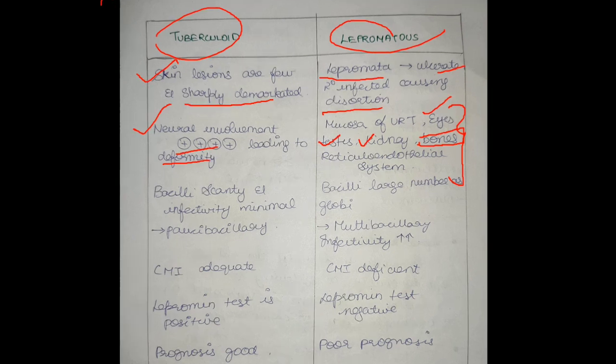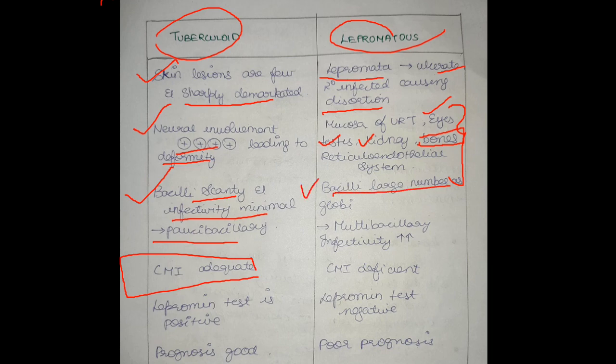Bacillary count: in tuberculoid type, there are scanty bacilli, so infectivity is minimal. This comes under paucibacillary type, and immunity is adequate. In lepromatous type, there are large numbers of bacilli which form globi. It comes under multibacillary type, and infectivity is very high because cell-mediated immunity is deficient. Lepromin test is negative in lepromatous type, and positive in tuberculoid type due to good cell-mediated immunity. Tuberculoid type has good prognosis, whereas lepromatous has poor prognosis.